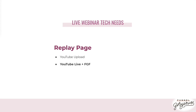With FG Funnels the replay is automatic. Once your live webinar is done, the YouTube Live automatically becomes a YouTube video, and since it's already embedded on your broadcast page with the buy button and all the information, you don't have to do anything — the same page they visited live becomes the on-demand replay. If you used the Facebook group route, the Facebook Live similarly just turns into a video people can watch anytime.